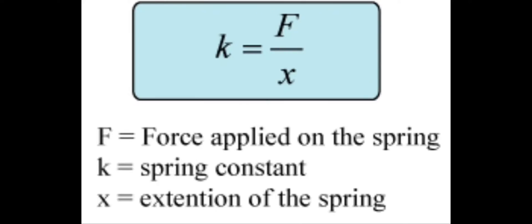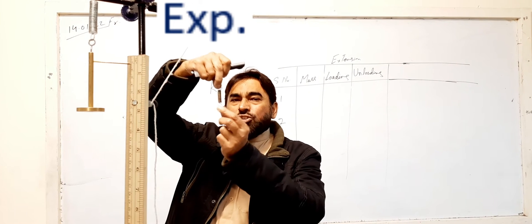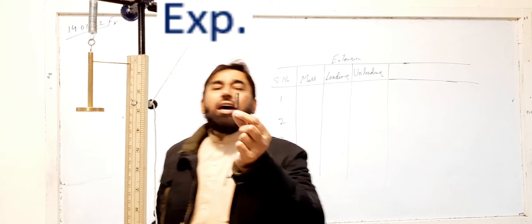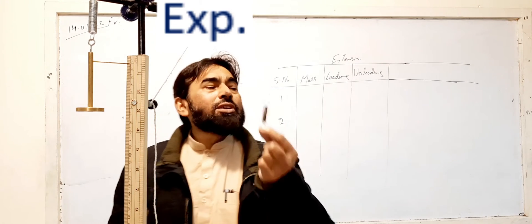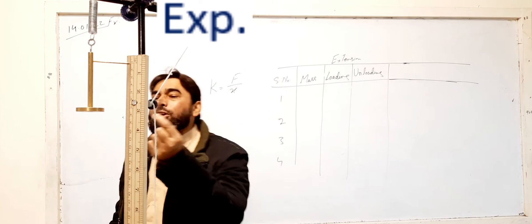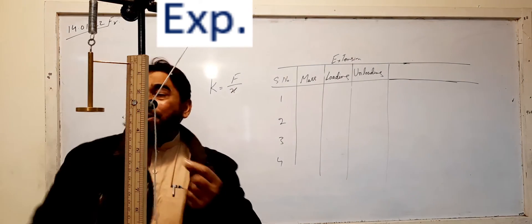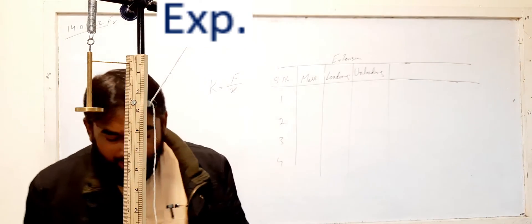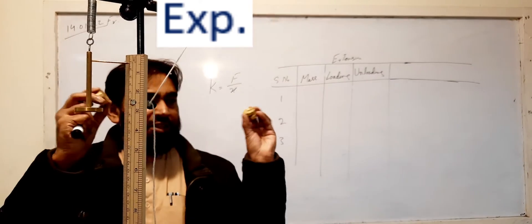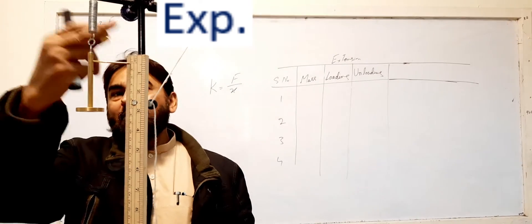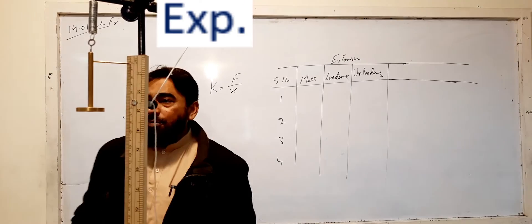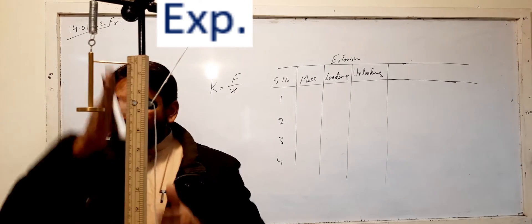We are going to find out the value of the spring constant with the help of this experiment. This spring is called the helical spring, and we are going to use this helical spring to conduct this experiment and find out its spring constant. Here is the hanger with which I am going to suspend the slotted masses or weights. I have adjusted the helical spring with the stand.